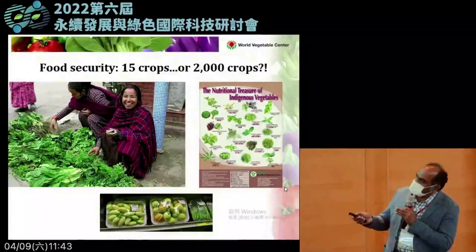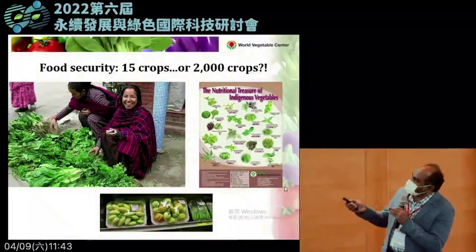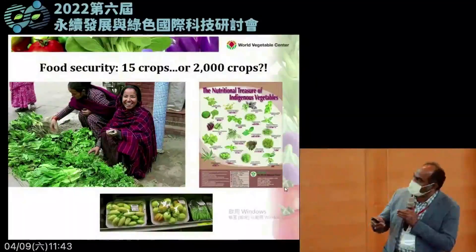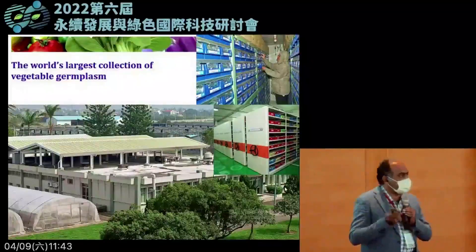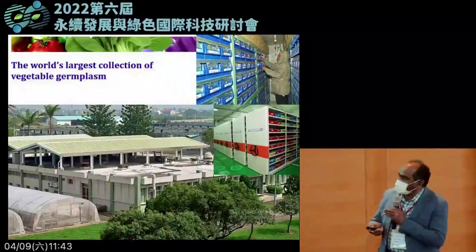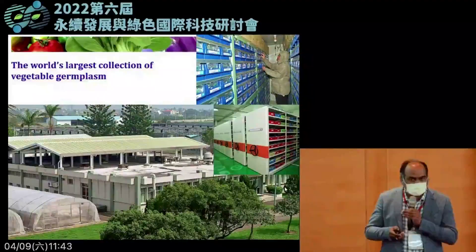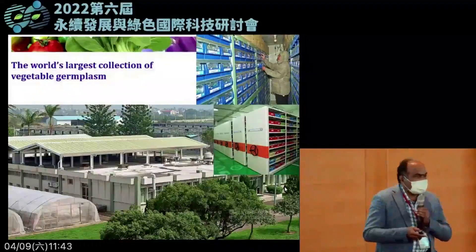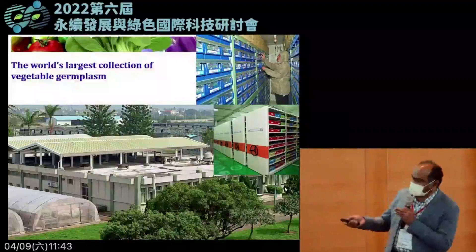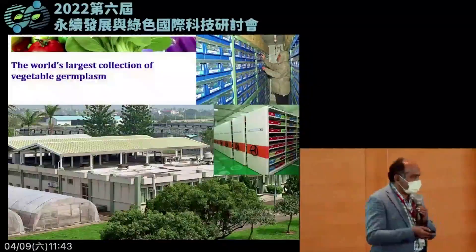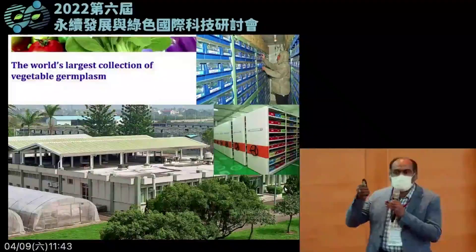At the World Vegetable Center, we focus a lot on food security as well as nutritional security, focusing not on a few crops but on a large number of crops. We have the world's largest public sector collection of vegetables — more than 65,000 different germplasm accessions collected from all over the world, covering more than 400 different vegetable species. It's not a museum — it's all live material with many unique accessions.